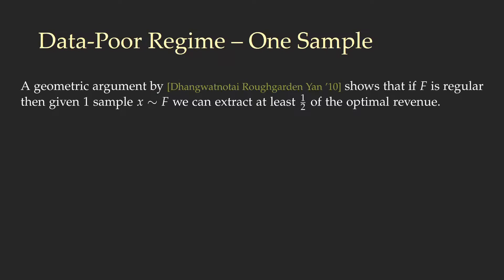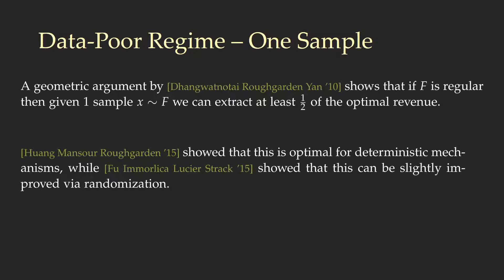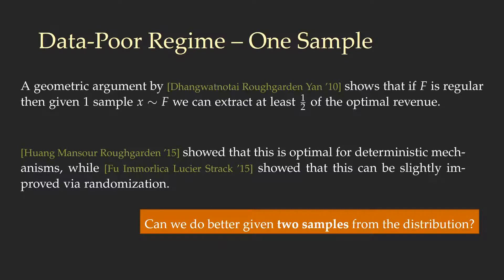In the extreme of the data-poor regime, when only one sample from F is available, a result dating back to 2010 shows that if F is a regular distribution, then given just one sample from F, we can extract at least half of the optimal revenue. Follow-up work has also shown that this is optimal for deterministic mechanisms, and that this bound can be slightly improved via randomization.